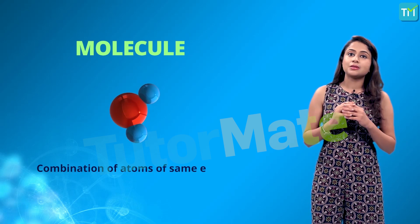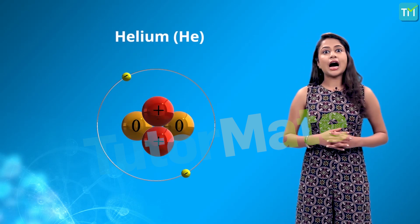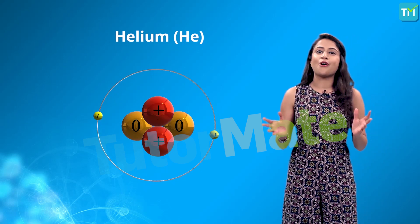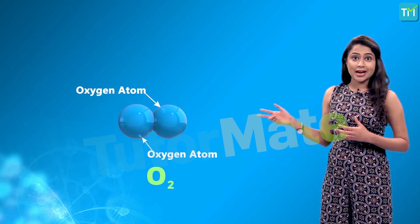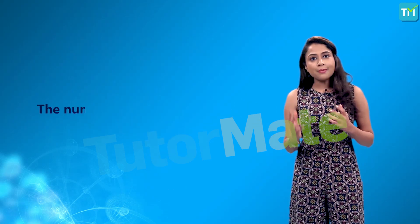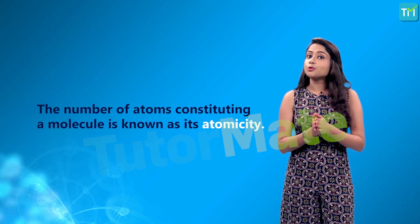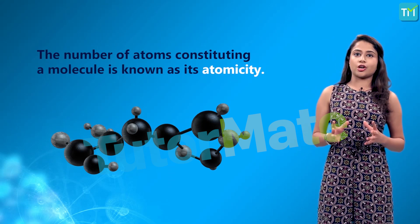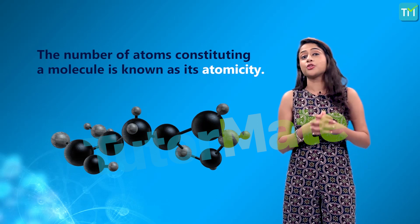Atoms of the same element or of different elements can join together to form molecules. The molecules of an element are constituted by the same type of atoms. Molecules of many elements such as helium are made up of only one atom of that element, but this is not the case with most non-metals. For example, a molecule of oxygen consists of two atoms of oxygen and is known as a diatomic molecule. The number of atoms constituting a molecule is known as its atomicity. Molecules of metals and some other elements such as carbon do not have a simple structure but consist of a very large and indefinite number of atoms bonded together.